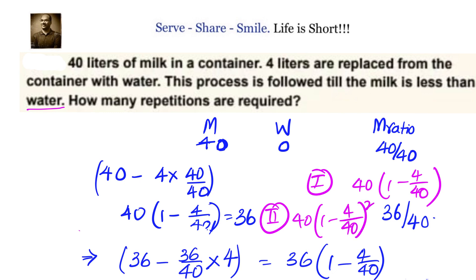Because 40 into (1 - 4/40) is 36, you can see that after first time it is 40 into (1 - 4/40) to the power of 1. Second time, 40 into (1 - 4/40) whole square. That means the formula is 40 into (1 - 4/40) to the power of n for n repetitions.